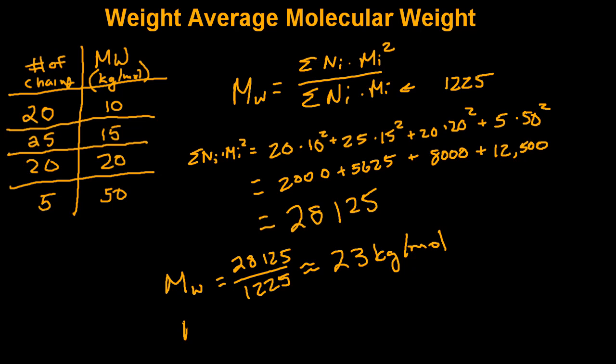In the previous video we determined that the number average was equal to 17.5 kilograms per mole. As you can see, that's a smaller value than the weight average. And this just demonstrates that within a polymer distribution, your weighted average will always be greater than the number average, due to larger chains making a larger contribution to the value.